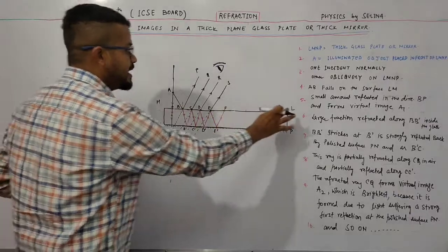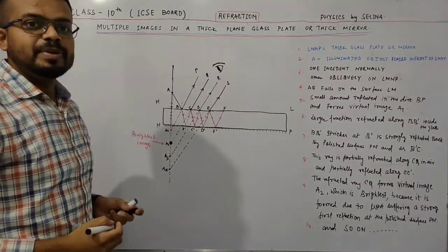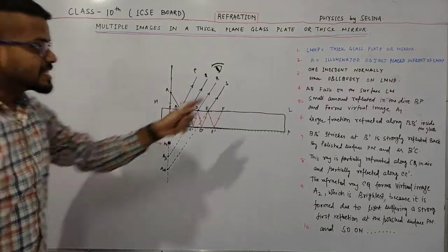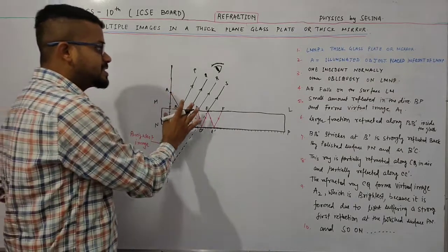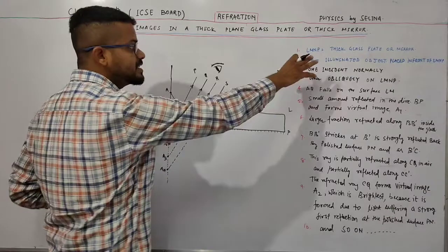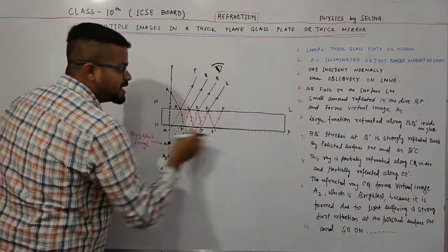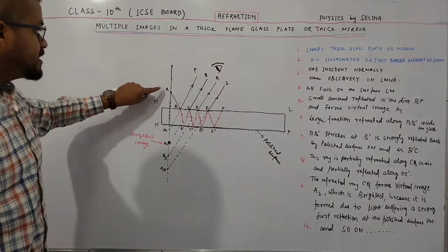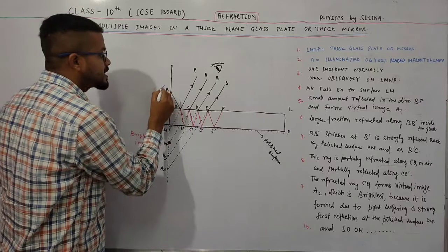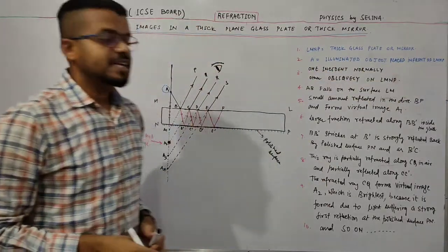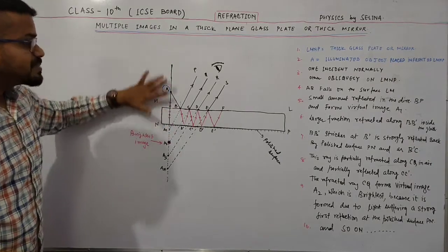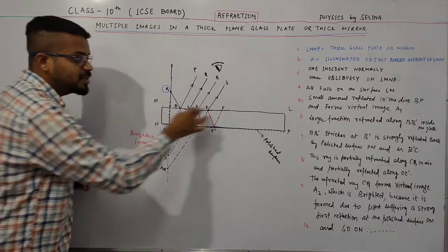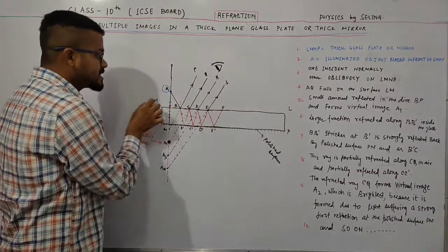LMNP is a thick glass plate or mirror. Here I have explained 10 points related to this topic. I will discuss each point and how the images are formed, so please concentrate on the board. NP is the polished surface. Point A is an illuminated object placed in front of the glass mirror, from which one light ray is incident normally on the glass plate and another is oblique on surface LM.